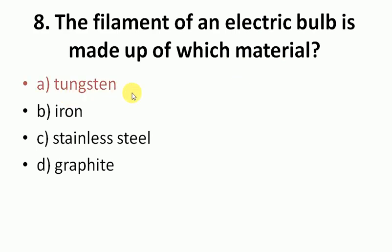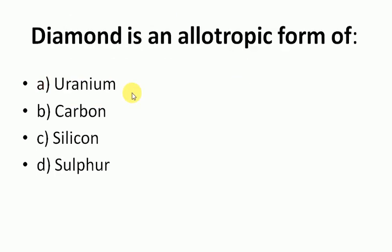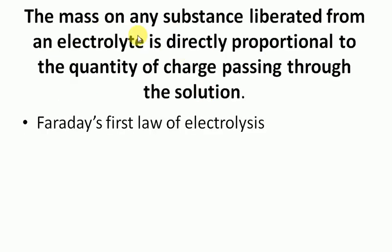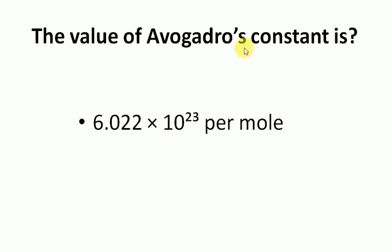Diamond is an allotropic form of carbon. The mass of any substance liberated from an electrolyte is directly proportional to the quantity of charge passing through the solution. This is Faraday's first law of electrolysis.